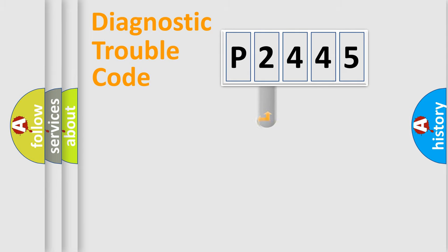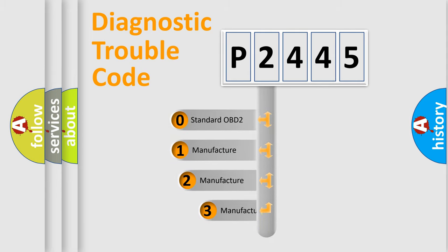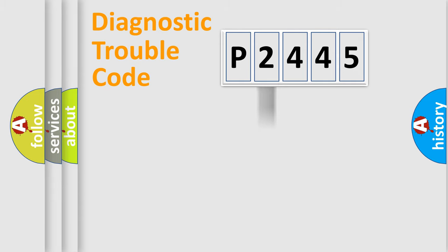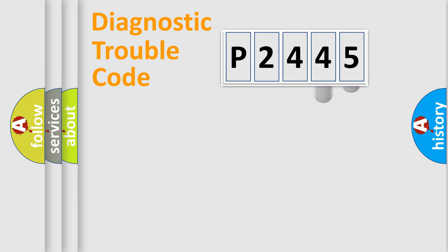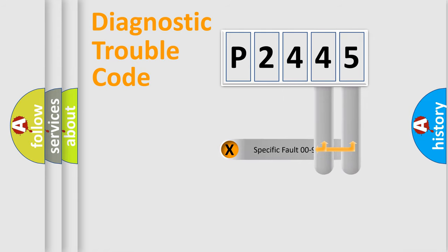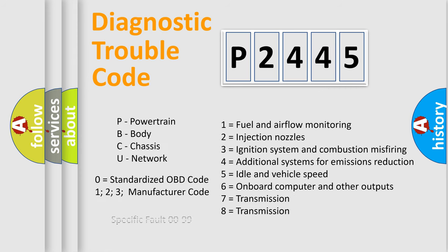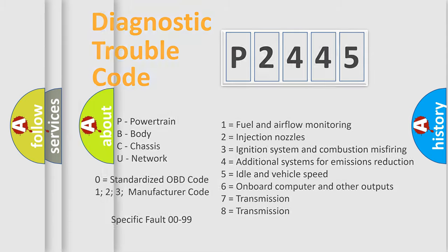This distribution is defined in the first character of the code. If the second character is expressed as zero, it is a standardized error. In the case of numbers 1, 2, or 3, it is a manufacturer-specific error. The third character specifies a subset of errors. The distribution shown is valid only for the standardized DTC code, and only the last two characters define the specific fault of the group. This division is valid only if the second character is expressed by the number zero.